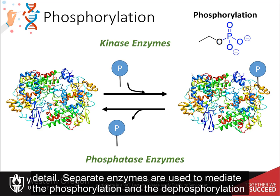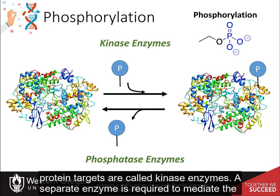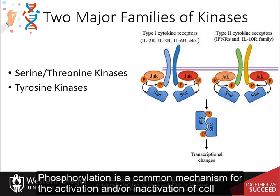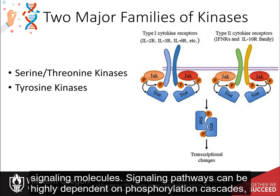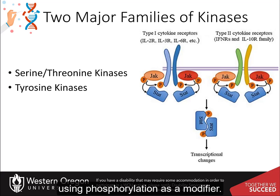Separate enzymes mediate the phosphorylation and dephosphorylation of a protein molecule. Enzymes that use ATP as a phosphate donor to phosphorylate their protein targets are called kinase enzymes, while a separate enzyme is required to mediate the removal of a phosphate group — these are called phosphatase enzymes. Phosphorylation is a common mechanism for the activation or inhibition of cell signaling molecules, and signaling pathways can be highly dependent on phosphorylation cascades.